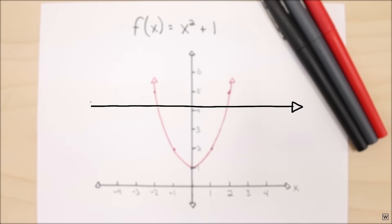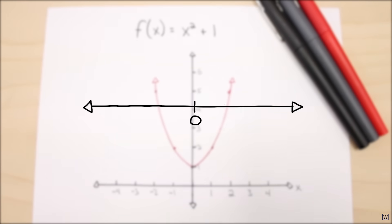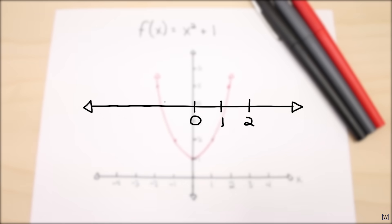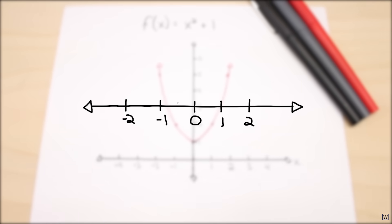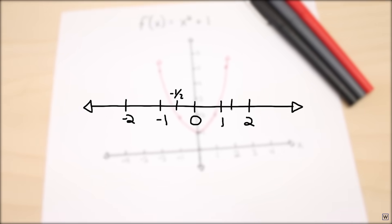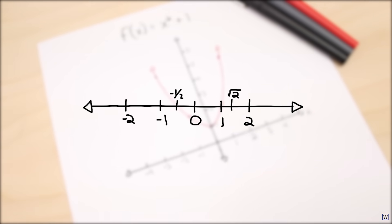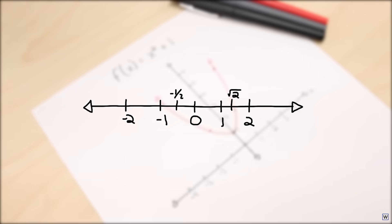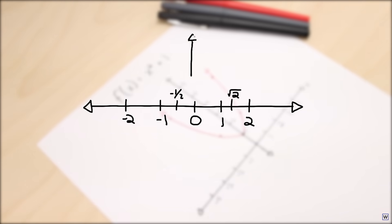We typically think of numbers existing on a one-dimensional continuum, the number line. All our friends are here: 0, 1, negative numbers, fractions, and even irrational numbers like root 2 show up. But this system is incomplete. And our missing numbers are not just further left or right. They live in a whole new dimension.